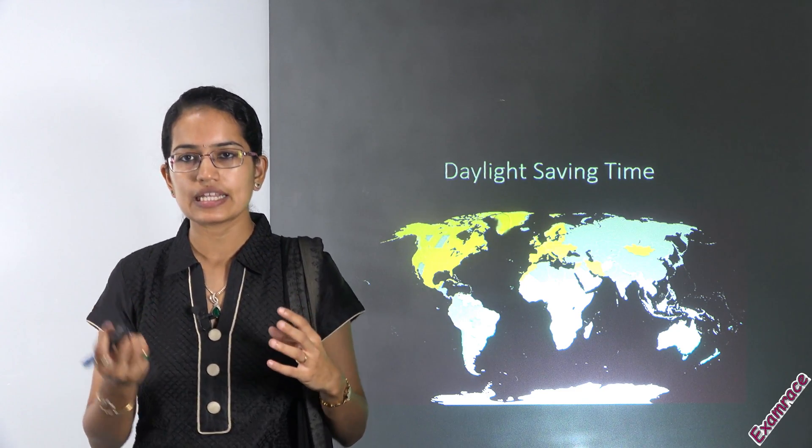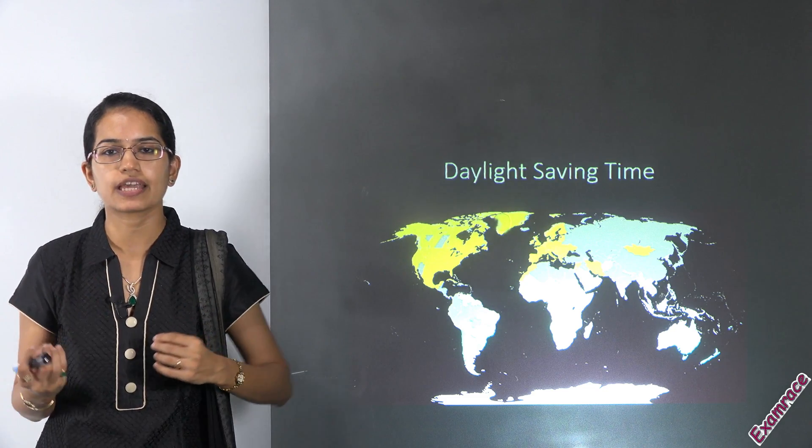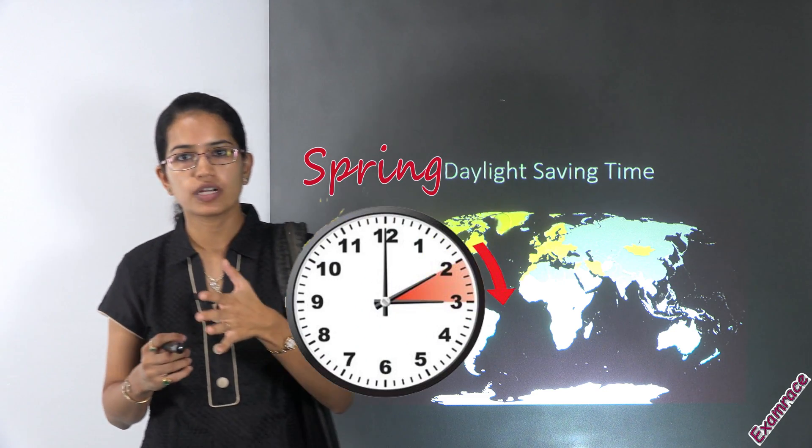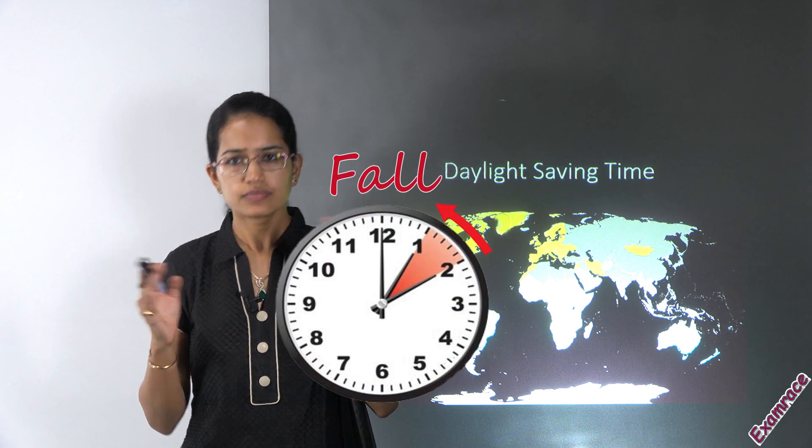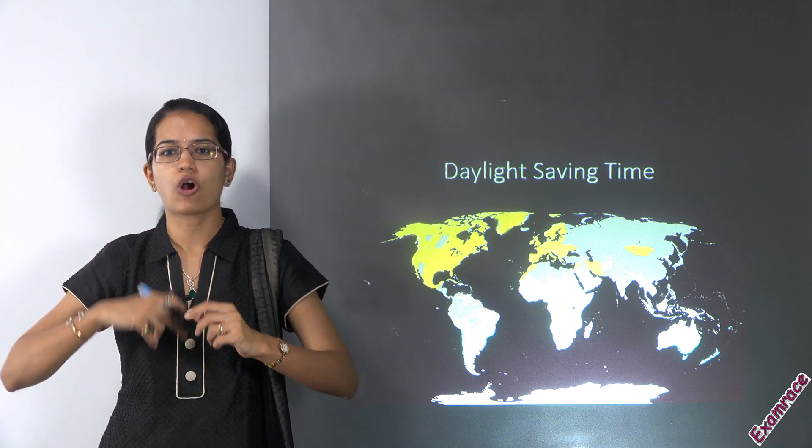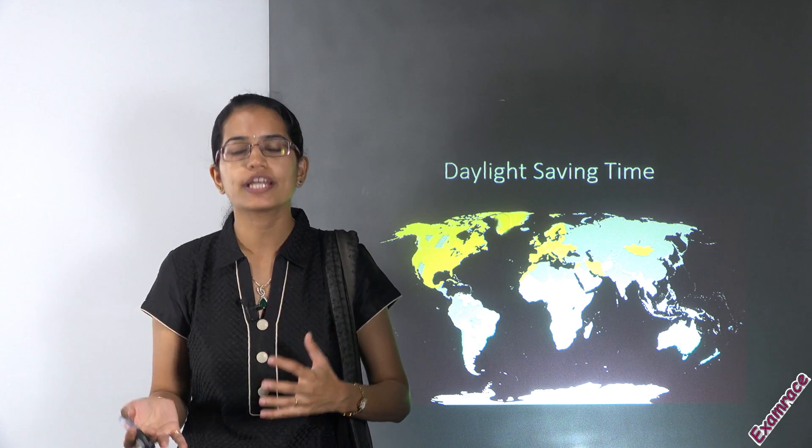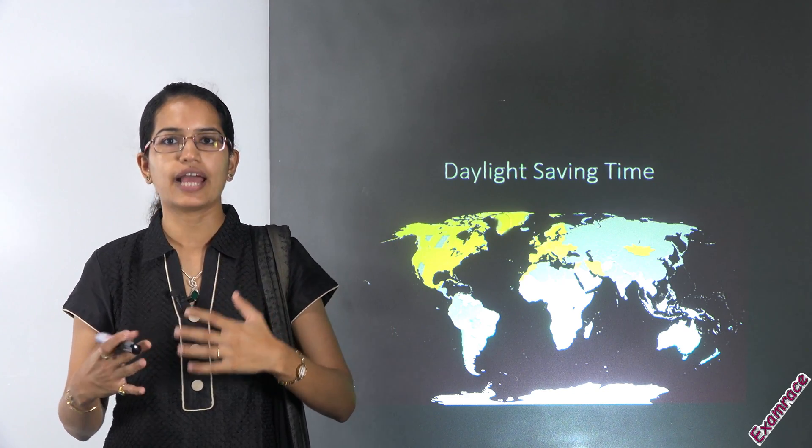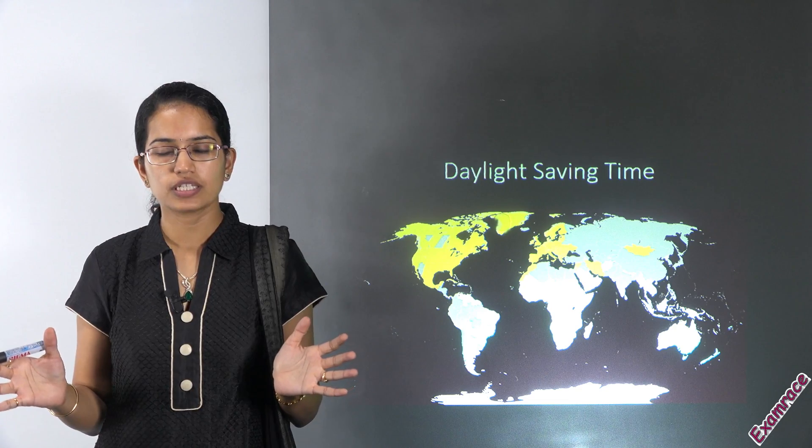Daylight saving is basically a simple concept where we say spring forward fall backward. That means during the summer months we shift our clocks ahead in order to absorb more natural sunlight that is falling into the region.